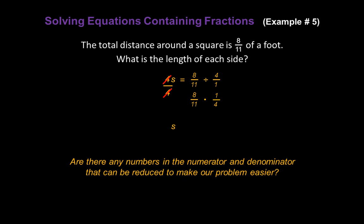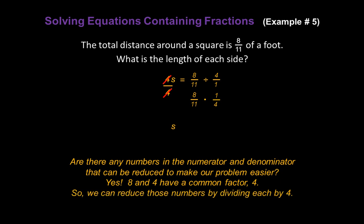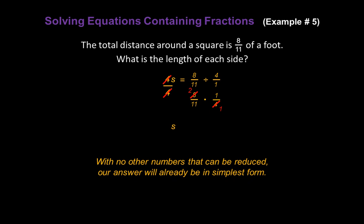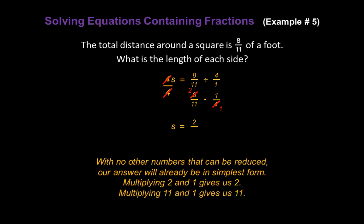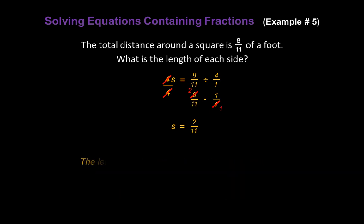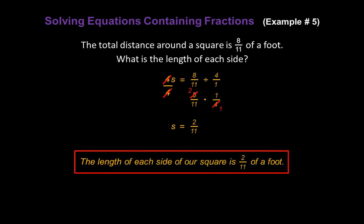Now that we're multiplying two fractions, are there any numbers that can be reduced? Yes — eight and four have a common factor of four. Eight divided by four changes the eight into a two, and four divided by four changes the four into a one. With no other numbers to reduce, our answer will already be in simplest form. Two times one in the numerator gives us two, and eleven times one in the denominator gives us eleven. So the length of each side of our square is two-elevenths of a foot.